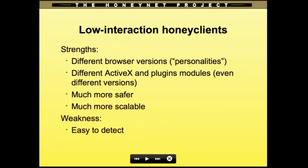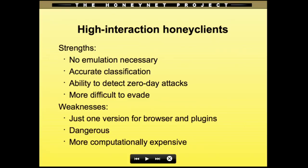The weakness of low interaction honeyClients is they are easier to detect because everything is emulated. If the emulation is good it's more difficult to detect, but not impossible. High interaction honeyClients have strengths: no emulation is necessary, they are real systems, so exploit classification is much more accurate, and there is the possibility to detect zero-day attacks. They are also much more difficult to evade. The weaknesses are: just one version for browser and plugins, it's much more dangerous since the system could be compromised, and it's much more computationally expensive.